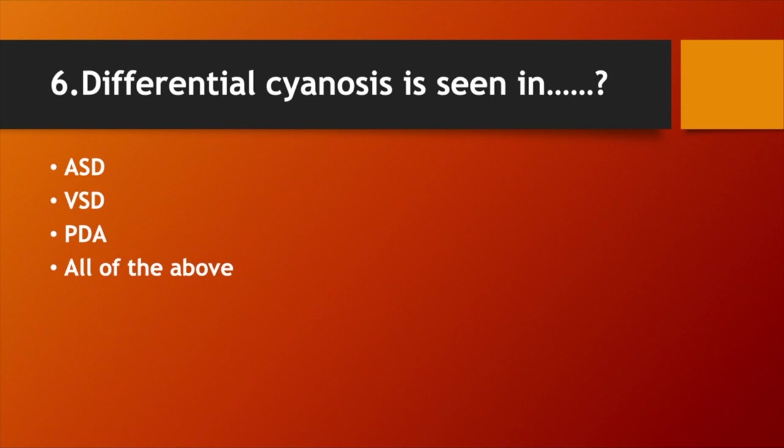Differential cyanosis is seen in: Option A. ASD. Option B. VSD. Option C. PDA. Option D. All of the above. Answer: Option C. PDA.